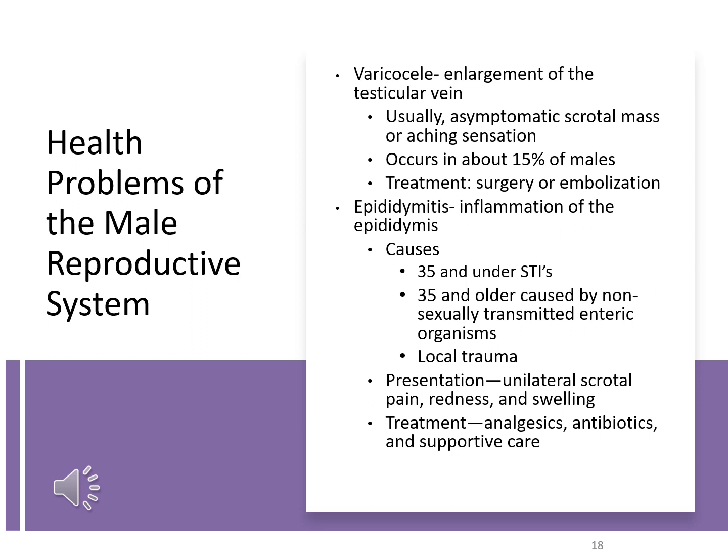Some health problems are related to the male reproductive system. The first is a varicocele, which is the enlargement of the testicular vein. It's usually described as an asymptomatic mass in the scrotum or an aching sensation, but typically does not cause pain. The reason it needs treatment is because it can cause infertility in males, and we treat this by surgically immobilizing the vein. Epididymitis is an inflammation of the epididymis, typically associated with STDs in people under the age of 35.